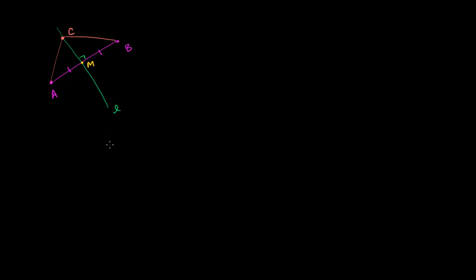Well, there are a couple of interesting things we see here. We know that AM is equal to MB, and we also know that CM is equal to itself. Obviously, any segment is going to be equal to itself. And we know if this is a right angle, this is also a right angle. This line is a perpendicular bisector of AB. And so we have two right triangles.